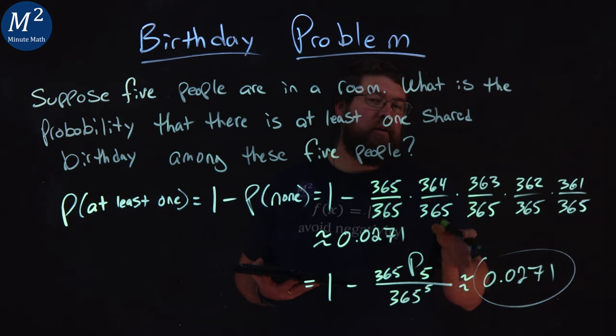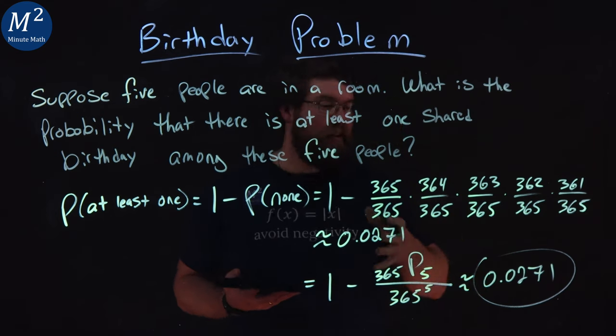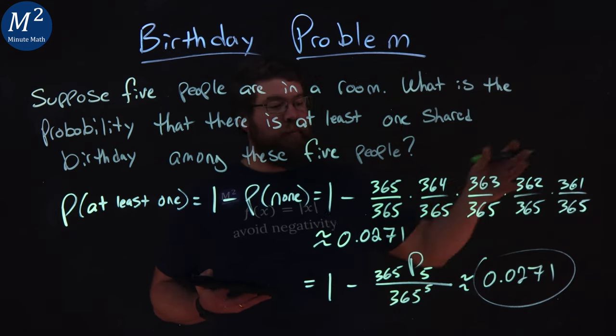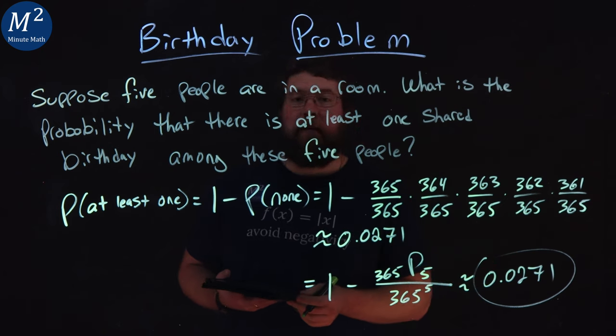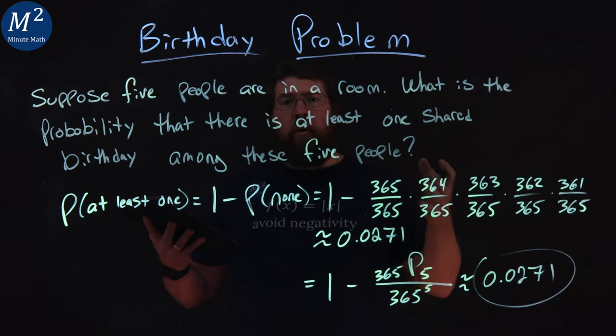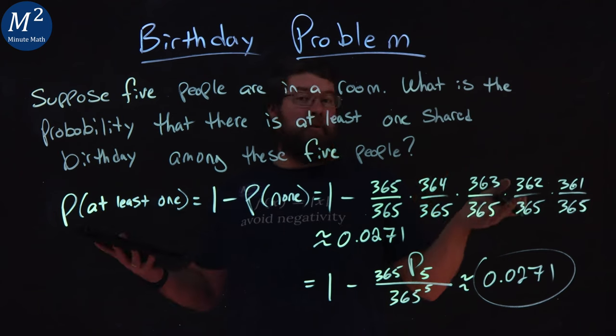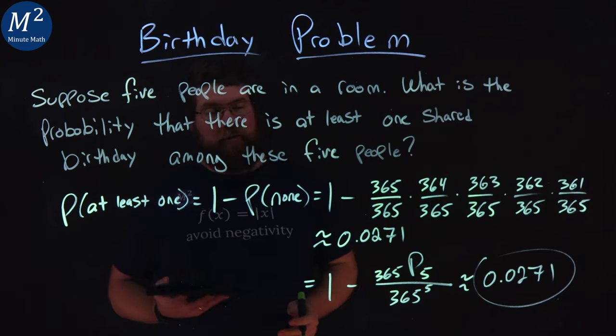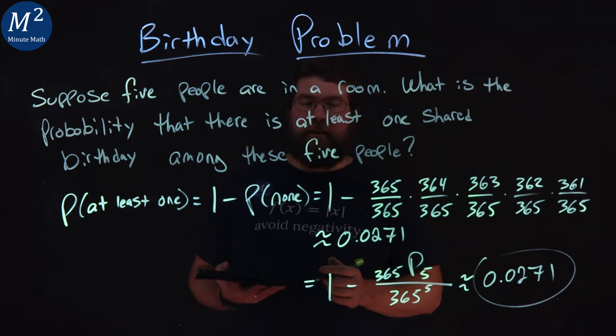But this way makes it easier, especially when you get to larger amounts of people in a room, to make that calculation without multiplying this whole thing out. I hope you learned something about the birthday problem with five people in a room. And as always, thanks for watching.